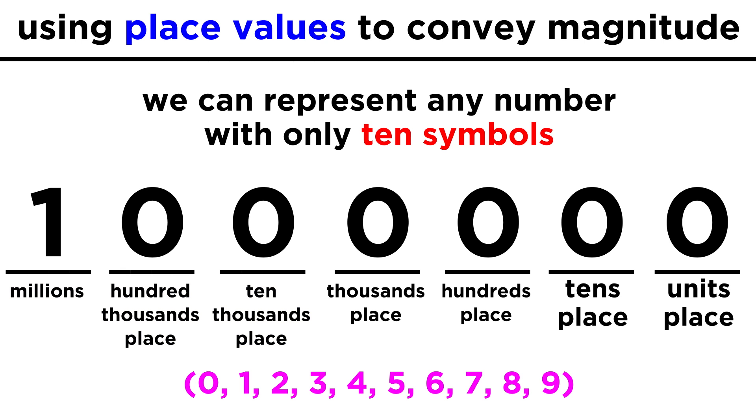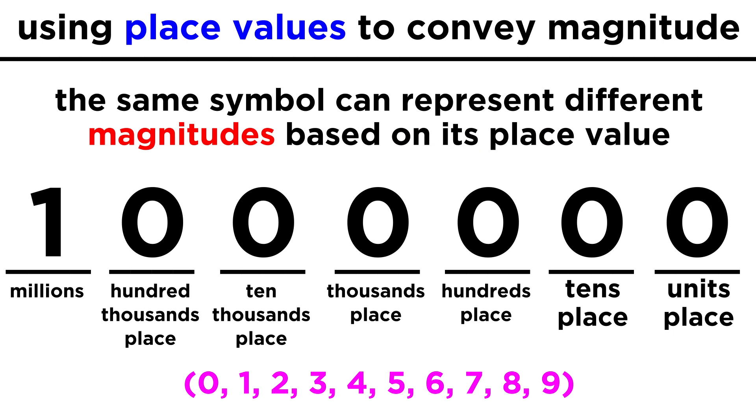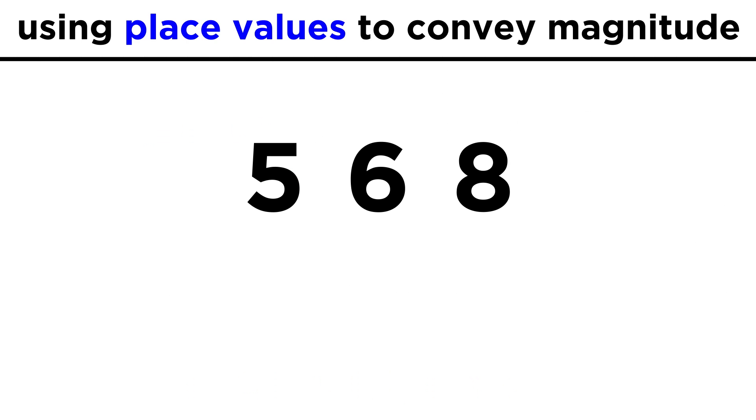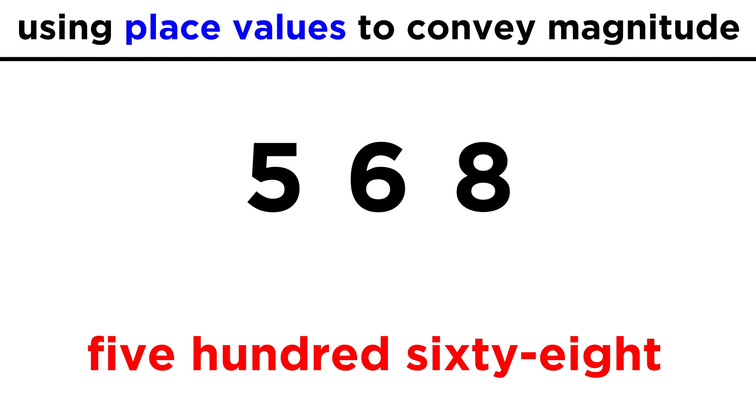This is a brilliant system, because it allows us to represent any number imaginable using the same ten digits, from zero to nine, just in combinations that demonstrate various magnitudes. The place values where these digits can be found indicate how big or small the number is. So a five and a six and an eight can come together to make five hundred sixty-eight, which is just five one-hundreds, plus six tens, plus eight ones.